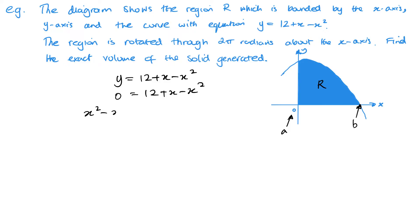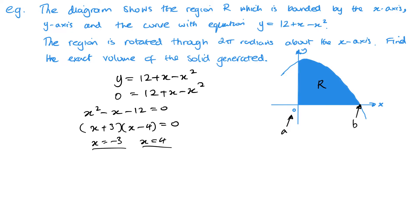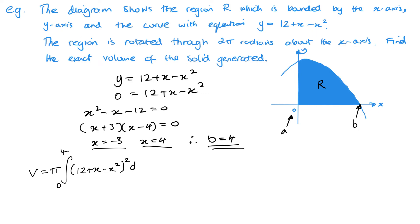Taking everything to the other side to solve it more easily, we want a 3 and a 4, and a negative 3 and negative 4, giving x equals minus 3 and x equals 4. So quite clearly B must be 4, because it's on the positive x-axis. Now that I know that, I can calculate the volume: V equals pi times the integral from 0 to 4 of y squared dx, which is (12 plus x minus x squared) squared dx. To solve this I want to expand the bracket and then integrate each term individually.